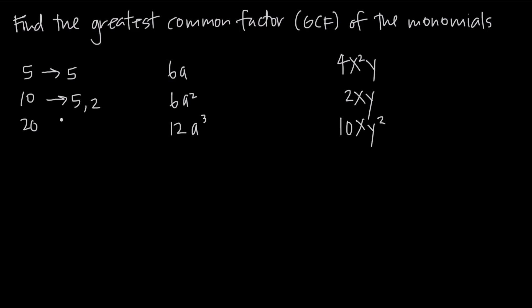Twenty broken down into its prime factors: if we do first ten and two, and then from ten we do five and two, notice that we have five, two, and two.